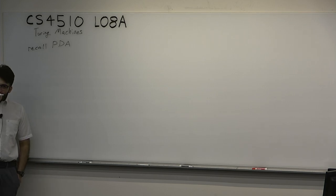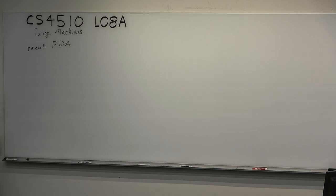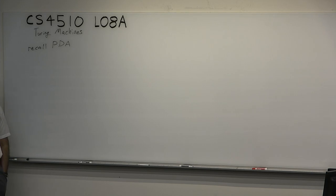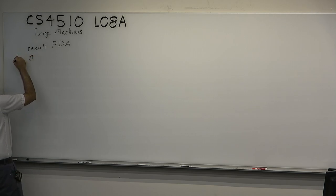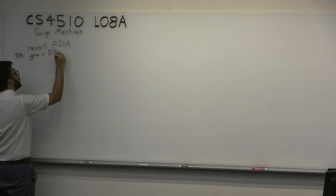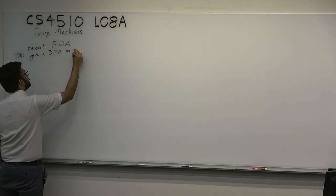This is sort of a weak data structure, but there's another data structure. Let's give a DFA a different data structure. What's a different data structure other than a stack? A queue. But is there an even simpler one? An array. A Turing machine is quite literally — you give a DFA an array. That's basically it.